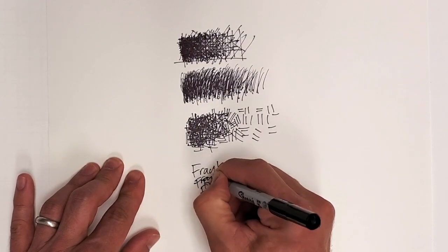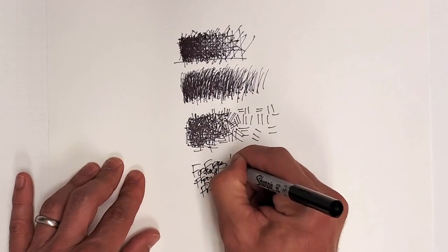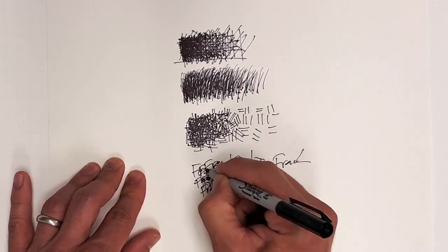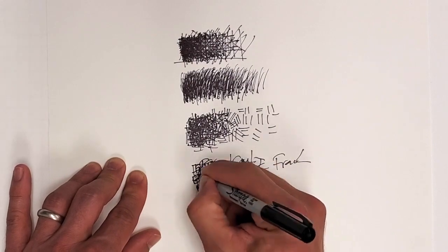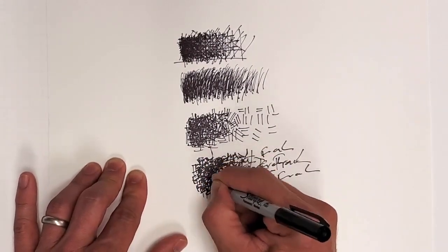And the more you layer up any of these lines, including a word or a name, the darker it will look. So speed that up. And again, you can create a value study with that.